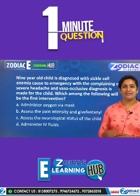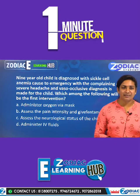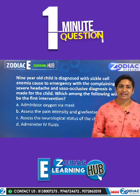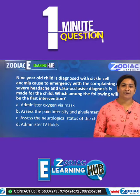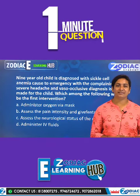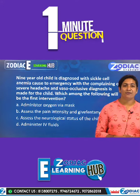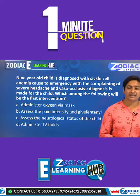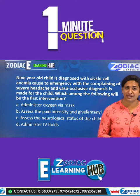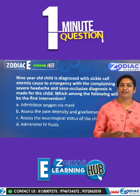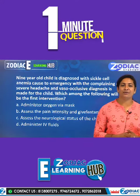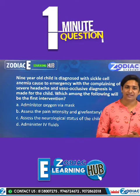A 9-year-old child diagnosed with sickle cell anemia comes to the emergency department complaining of severe headache, and a vaso-occlusive crisis diagnosis is made. Which among the following will be the first intervention?